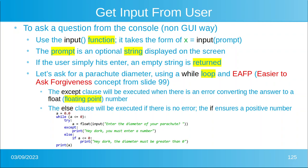Let's ask for a parachute diameter using a while loop, and the concept from slide 99: easier to ask forgiveness than permission. The except clause will be executed if there's an error converting the answer to a float. In other words, if you ask the user for a diameter and he enters 'any' — well, 'any' is not a diameter. So you have to tell them they've got to enter a number. Maybe hit pause and look at the clause — that's exactly what this is going to do.